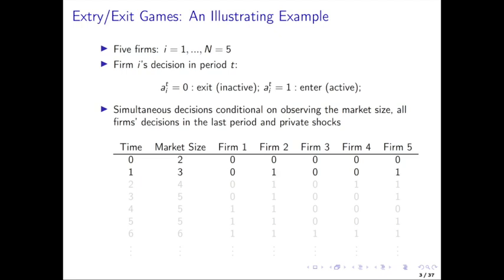It's a simultaneous choice. Sometimes you can model games with alternating moves, and this is not the case here. We're going to look at an alternating move model next time in the case of a leapfrog model where firms alternate in terms of when they're making their decisions. But not here. So we're going to look at simultaneous moves. Then the game moves on — we go to the next period, market size is revealed, it's increasing, and then firms make their decisions with more firms entering.